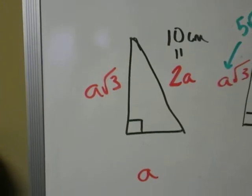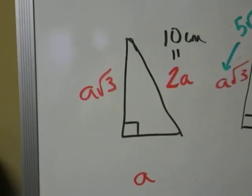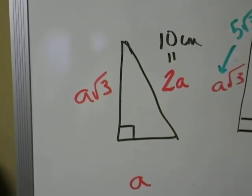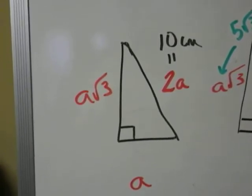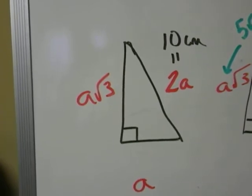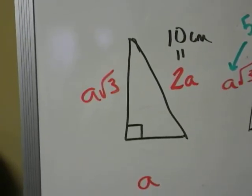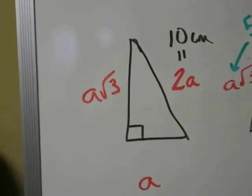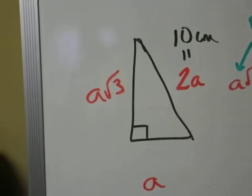The special right triangle has a short leg of length A, a hypotenuse of 2A, and a tall leg of A radical 3. Remember that 2A is the radius, that's how I know it's the 10 centimeters. The A radical 3 is going to be my apothem, so I need to figure out what A is in order to figure out the length of the apothem.